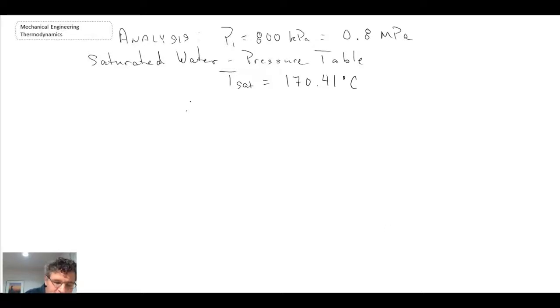So that's one piece of information we have. What that also tells us is that at T2 equals 350 degrees C, that's higher than 170, and that means that we are superheated, which makes sense because we start off in the two-phase region and we add heat. There's only one place we're going to go, and that's into superheated vapor.